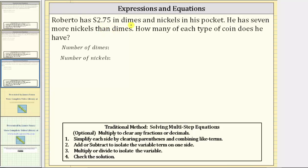Roberto has $2.75 in dimes and nickels in his pocket. He has seven more nickels than dimes. How many of each type of coin does he have?